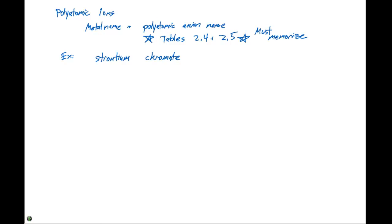The chromate is CrO4 2 minus. Again, that's one of the ones that you're gonna have to memorize. So we have SrCrO4, that's gonna be the chemical formula for strontium chromate.